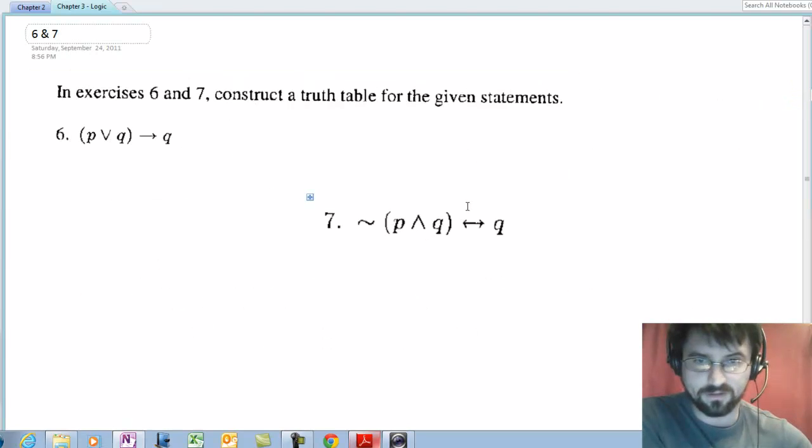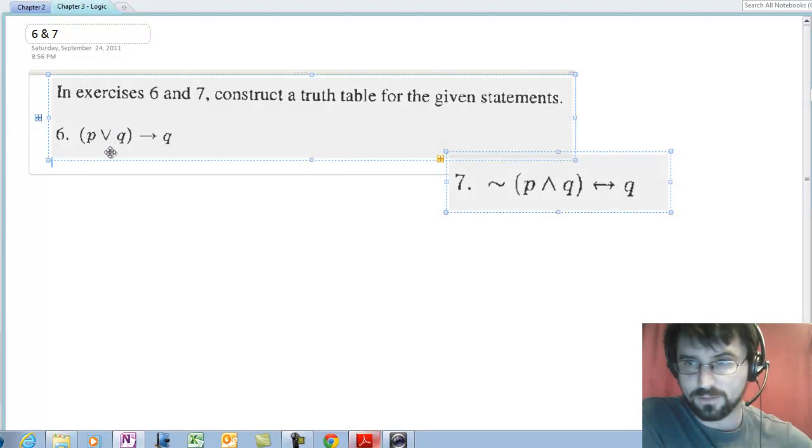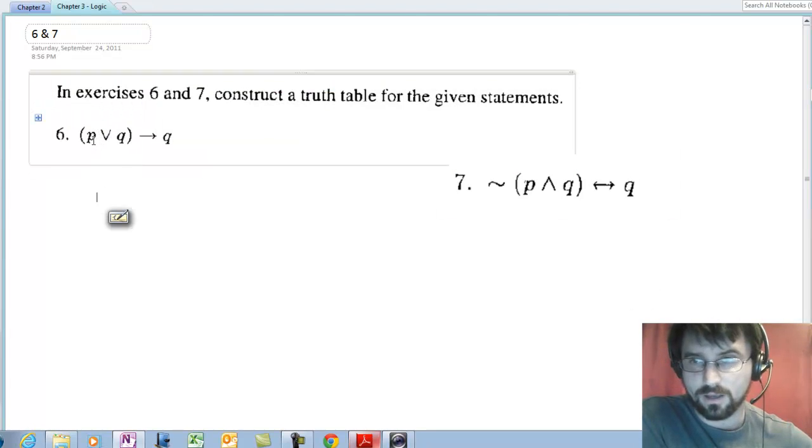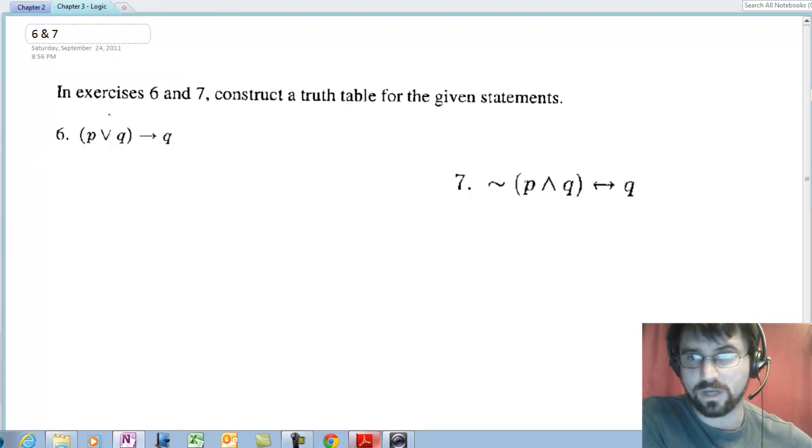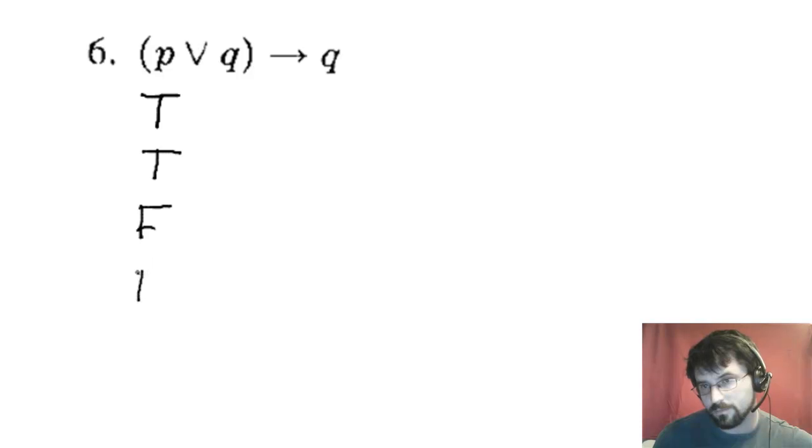I'm going to start working these out because these are a little more involved, but there's nothing really hard here. This is a truth table where we're given just two simple statements, a P and a Q, and so we're going to have four lines. If we had three variables, if we had a P, a Q, and an R, we'd have to do eight lines. The pattern for setting these up, as we've discussed in class many times, is half true, half false, and then every other. The P's always go first and then the Q's.